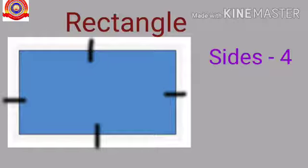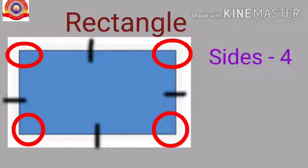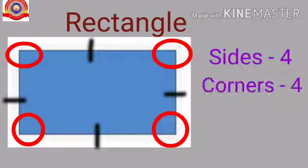How many corners are there in a rectangle? Yes, one, two, three, four. So, a rectangle has four corners. In a rectangle, opposite sides are equal.